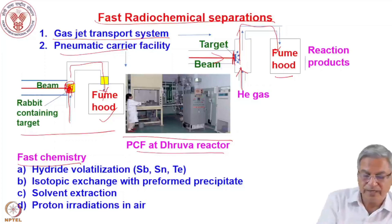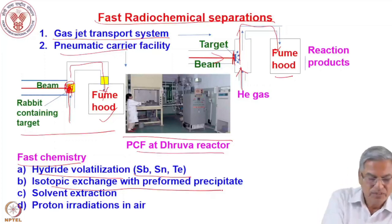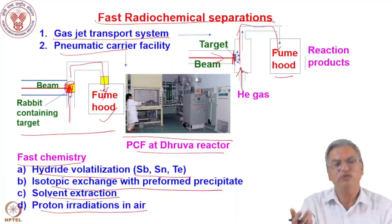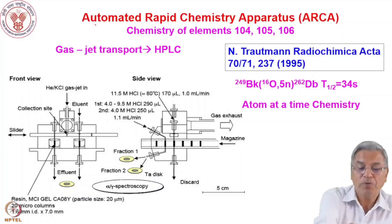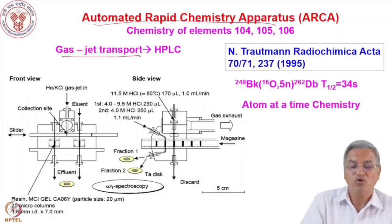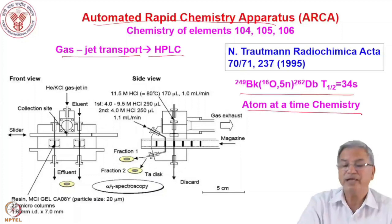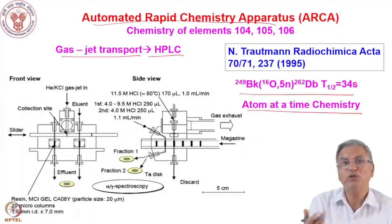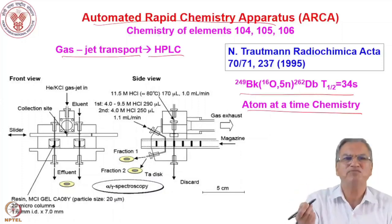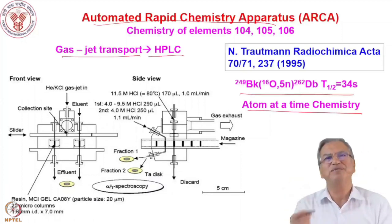Some examples of fast chemistry: antimony, tin, tellurium can form hydrides — within a few seconds you can separate them. Isotopic exchange with preformed precipitate, solvent extraction — even in accelerators you can irradiate in air for proton beams. For heavy elements, automated rapid chemistry apparatus (ARCA) has been developed: a gas jet transport system followed by high-performance liquid chromatography. Dubnium-105 was separated using this ARCA system. Atom-at-a-time chemistry means only one atom is formed at a time, so you do thousands of chemistries — that is how you study the chemistry of these elements and determine thermodynamic quantities.